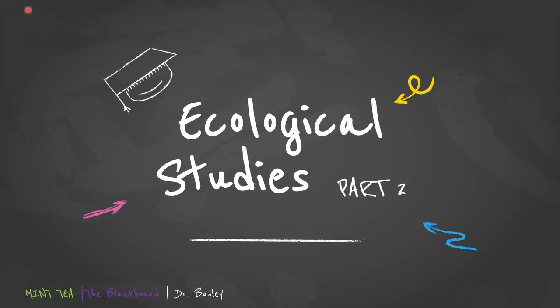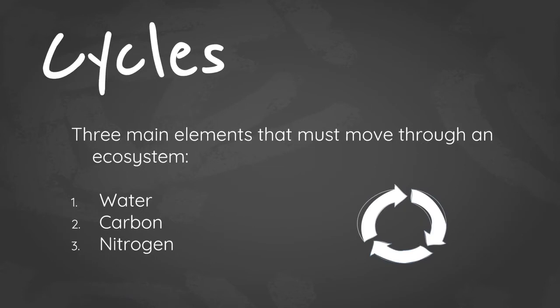Today's lesson is ecological studies, part two. We'll be using the same syllabus as our guide, starting with cycles. Cycles simply show how material moves through an ecosystem, and the three main elements that must move through an ecosystem are water, carbon, and nitrogen.